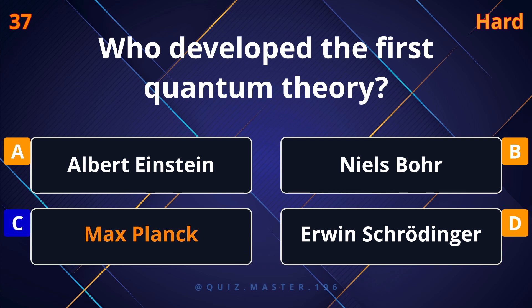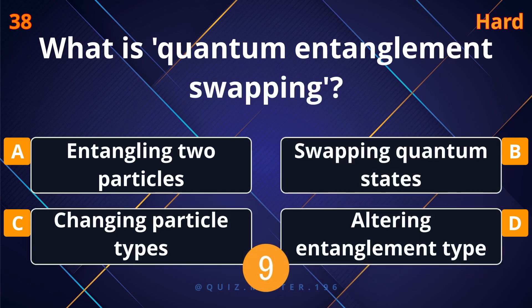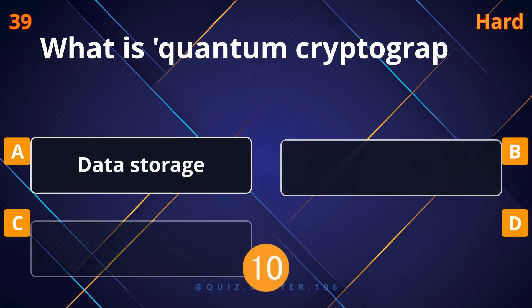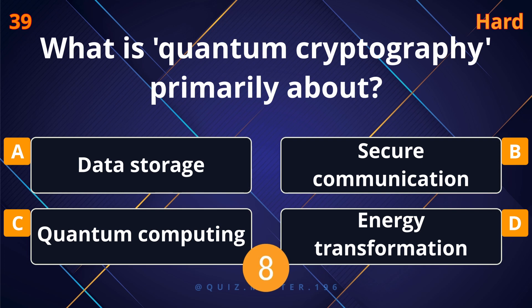Who developed the first quantum theory? Max Planck. What is quantum entanglement swapping? Quantum states.